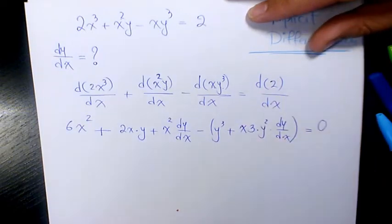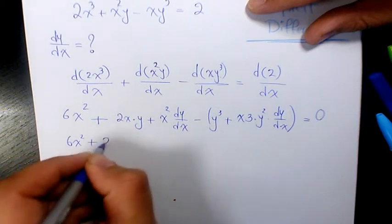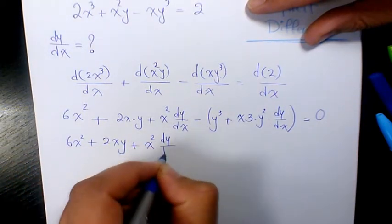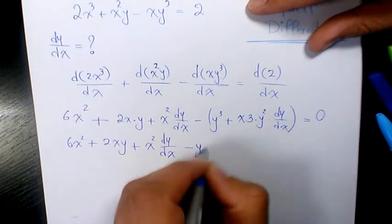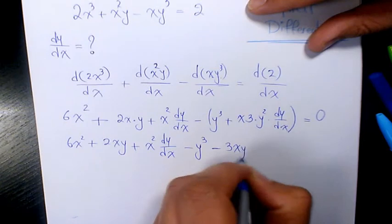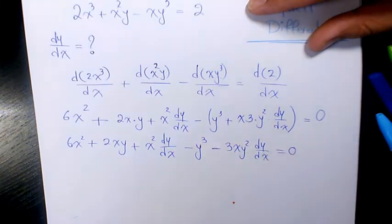That's going to equal the derivative of 2 with respect to x. So we have 6x² + 2xy + x² dy/dx - y³ - 3xy² dy/dx = 0.